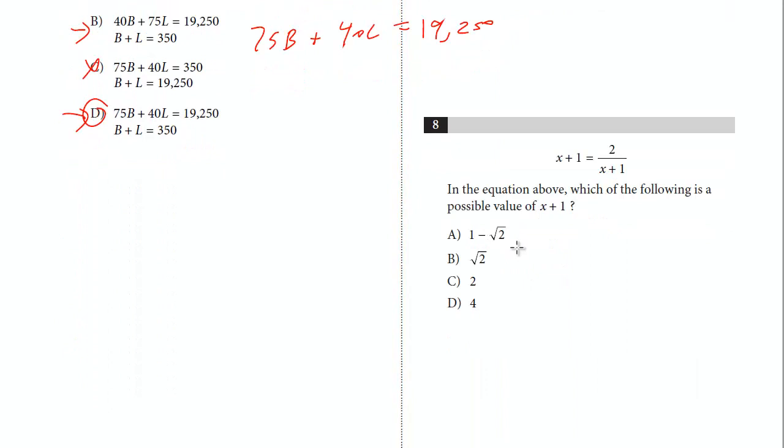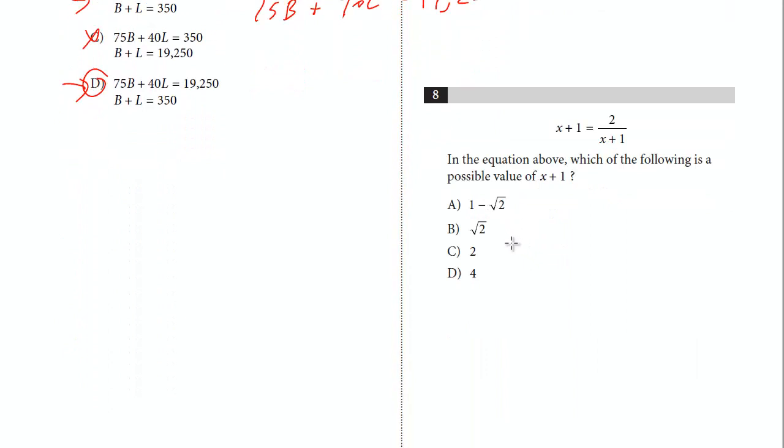And we'll take a look at the last question on this page, number eight. In the equation above which of the following is a possible value of X plus 1? All right, so we're looking to find X plus 1. And now we have X plus 1 equals 2 over X plus 1. How can we clear that? We can clear the denominator if we multiply both sides by X plus 1. And so here, that's going to cancel out. And on this side, we get X plus 1 times X plus 1. So it's X plus 1, the quantity squared equals 2.